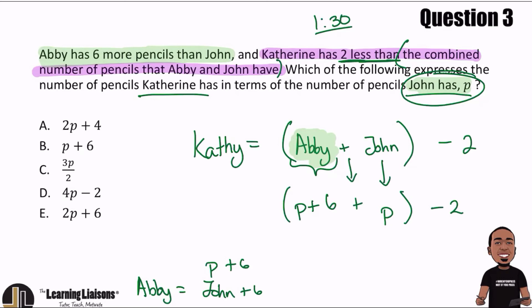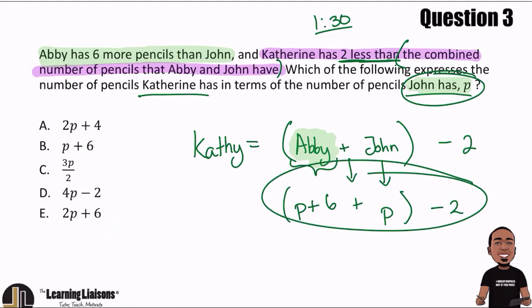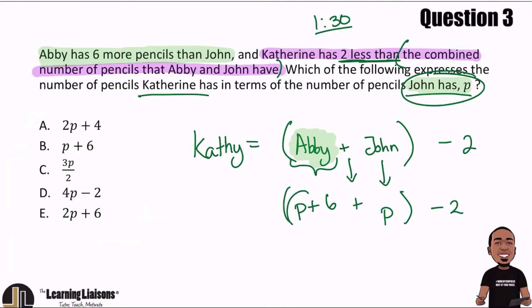This turned out to be a semi-quick solution. Now looking at the answer choices, I have a parentheses there, and I can also combine some like terms. So p and p make 2p plus six.